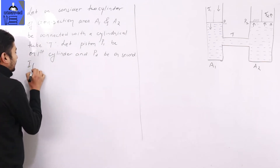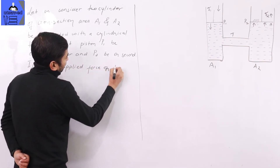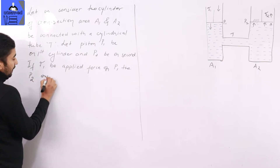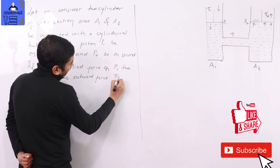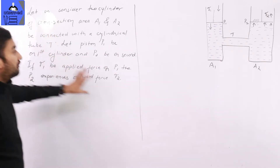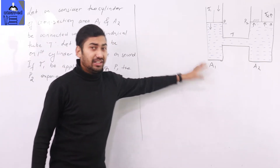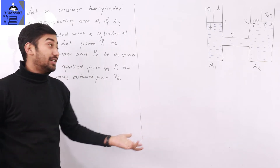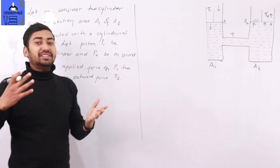If force F1 is applied on piston P1, then piston P2 experiences an outward force F2. F1 is the inward applied force, and F2 is the outward force that P2 experiences. The main important thing here is the figure — you can refer to it in your own language or textbook.